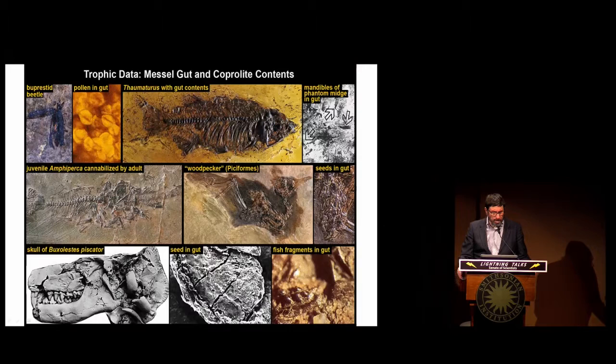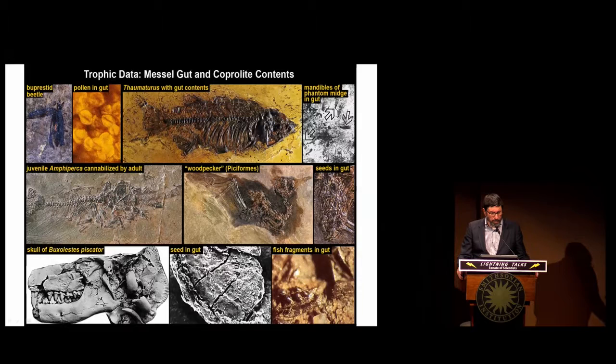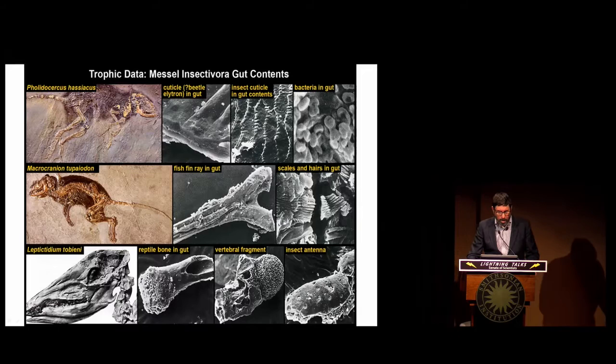We have an example of cannibalism in the center left, and then we have all of these organisms from bacteria, to plants, to insects, to fungi, to various groups of vertebrates and all of their intricate relationships, such as gut contents. In the case of the woodpecker, we have seeds in its gut. We have an amazing example of dentition in the lower left, and in that organism we have seeds and fish fragments. Many of these vertebrates are extinct, but in the case of the insects, they're still around, though a lot of these groups no longer occur at the higher lineages.